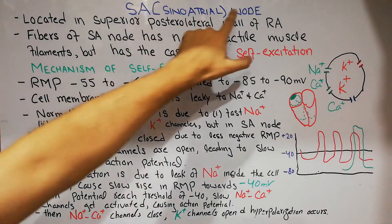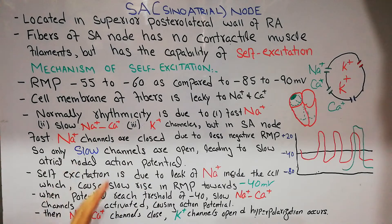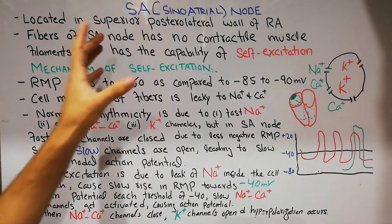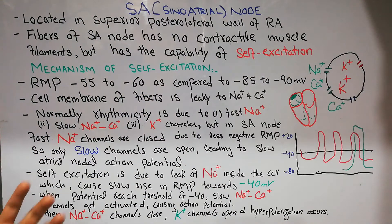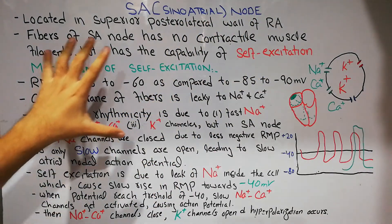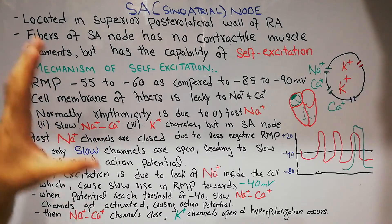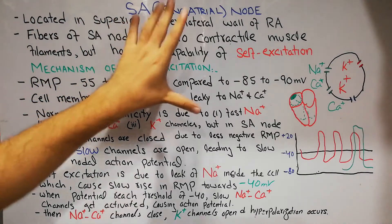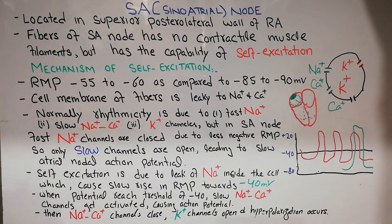Today we are going to discuss the SA node or sinoatrial node. The heartbeat normally is due to the activity of the SA node. The sinoatrial node is basically the pacemaker of the heart — the normal heart rate and rhythm are due to its activity. Although there are many excitatory fibers in the heart, it is the SA node which normally acts as the pacemaker and regulates the heart rate.